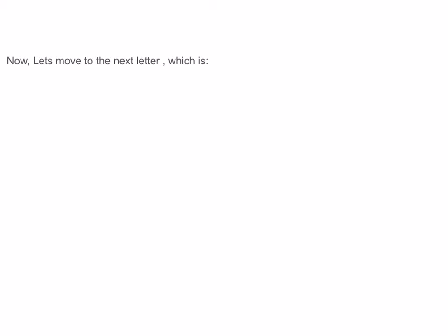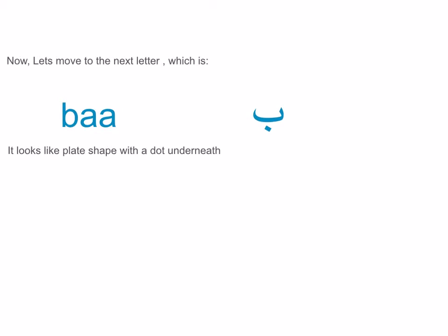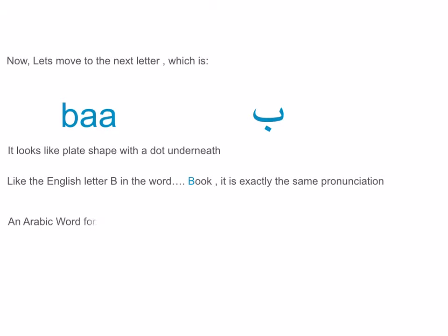Now let's move to the next letter, which is Ba. It looks like a plate shape with a dot underneath, like the English letter B in the word 'book' — it's exactly the same pronunciation. An Arabic word for this letter would be 'bab,' which means 'door.' Make sure to write the letter from right to left.